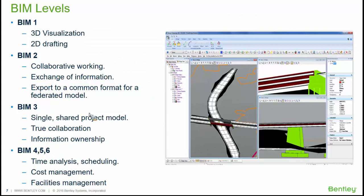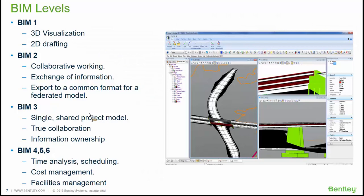The real BIM is when we create a single model for the entire project — shared and federated. This is not a mega model; it's just a shared, federated model in which everything is referenced to each other. That enables true collaboration. I'm the owner of my own information. The bridge designer cannot change the location of my drainage inlet, and cannot modify the roadway profile. But they can read that information — read the superelevation of the roadway and apply it to the bridge. That is the real BIM.